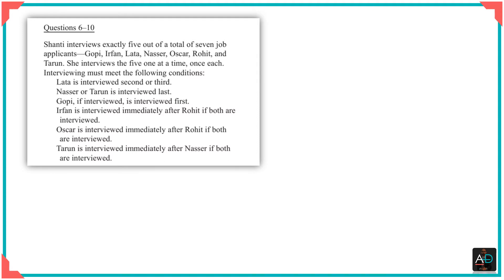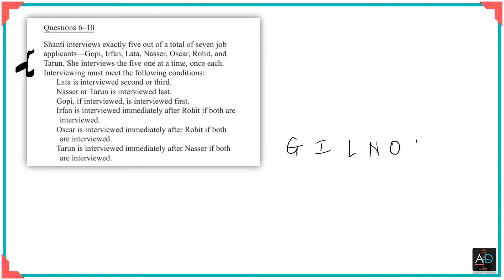If you paid attention, you'd realize that Shanti doesn't really matter in this question — she is the interviewer who conducts the interviews. The names that matter are the applicants: Gopi, Irfan, Lata, Nasr, Oscar, Rohit, and Tarun. Fortunately, all of them start with different alphabets, so we can code them with just the first letter. Shanti is just the interviewer — remember that.